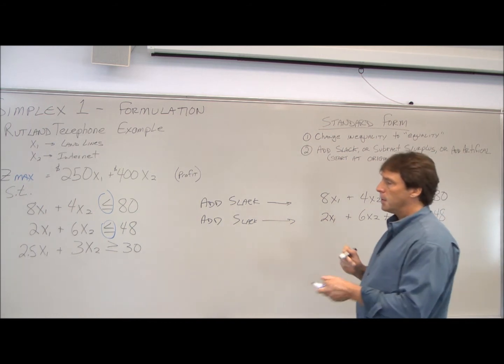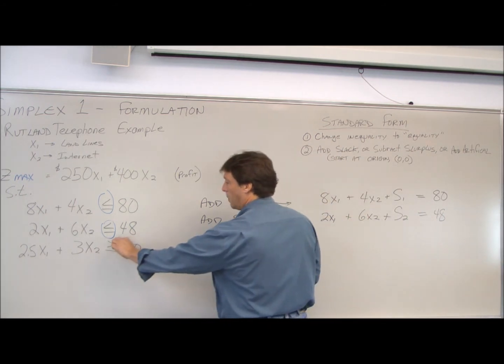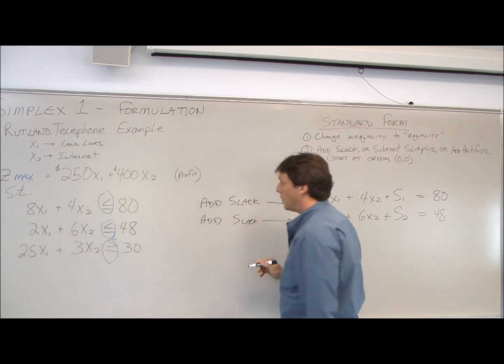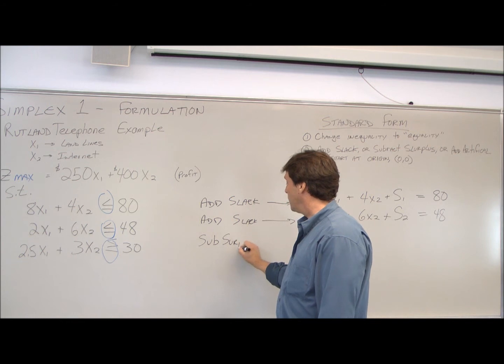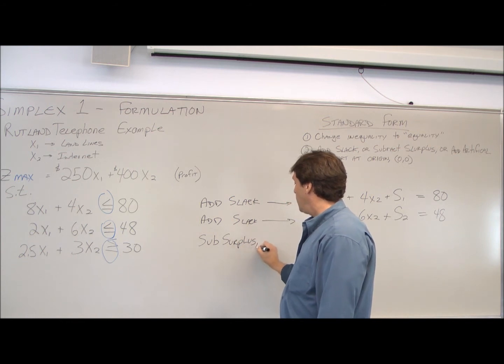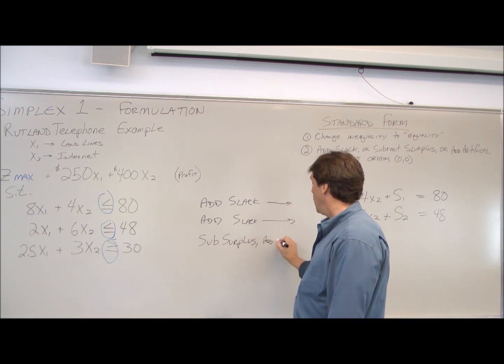Our third constraint here is a greater than or equal to. So with a greater than, we have to subtract surplus, and we have to add an artificial.